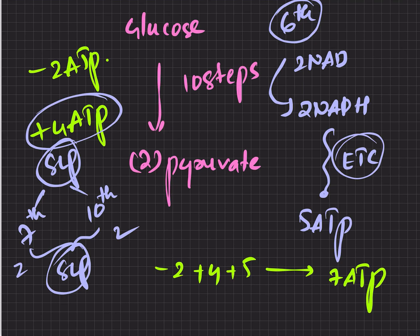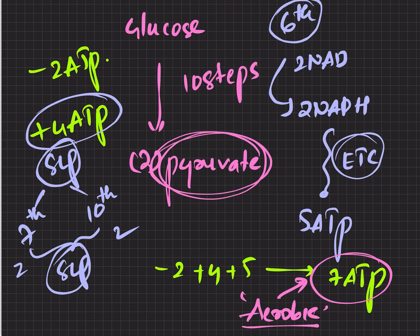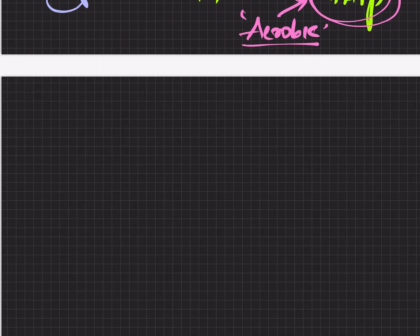So what has finally come? 7 ATP. Under aerobic conditions we have got 7 ATP produced. Remember, in aerobic conditions the final product will be pyruvate, and therefore we get 7 ATP produced.